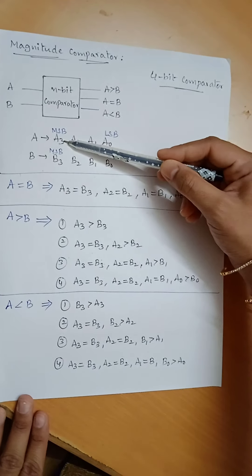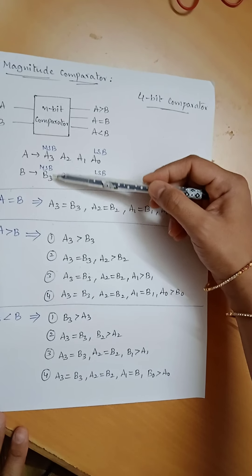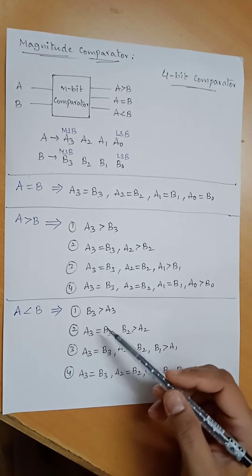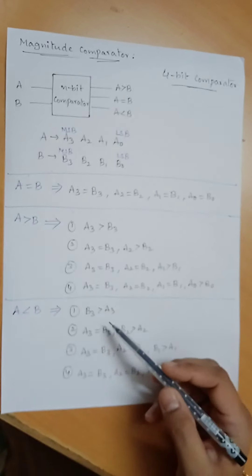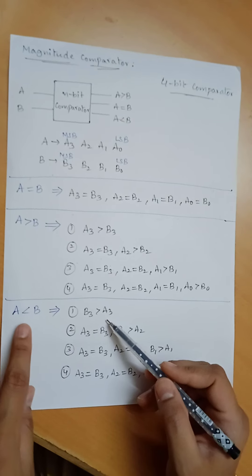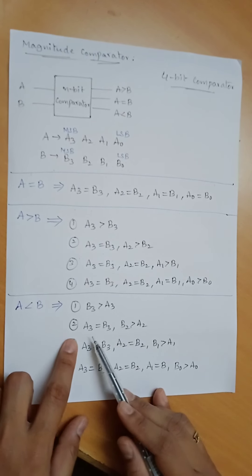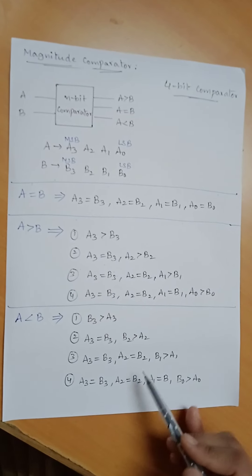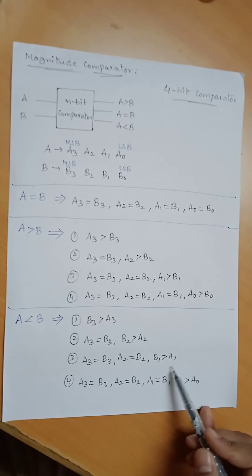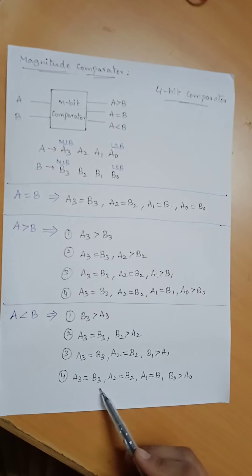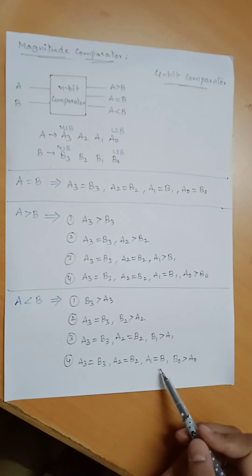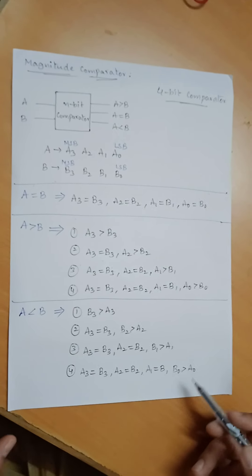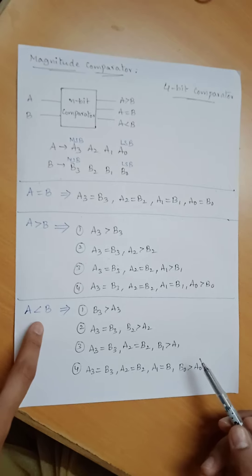Depending on the MSB bits of both numbers A and B, the comparison can be concluded. For A less than B, there are 4 cases: if B3 is greater than A3, A is less than B. Second case: A3 equal to B3 and B2 greater than A2. Third case: A3 equal to B3, A2 equal to B2, B1 greater than A1. Fourth case: A3 equal to B3, A2 equal to B2, A1 equal to B1, B0 greater than A0. These are the 4 possibilities to conclude that A is less than B.